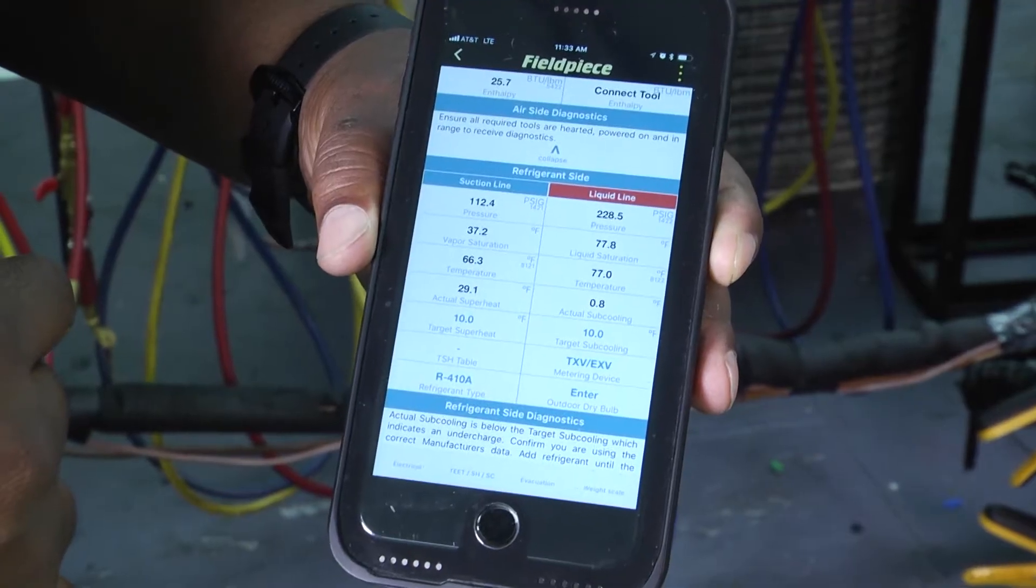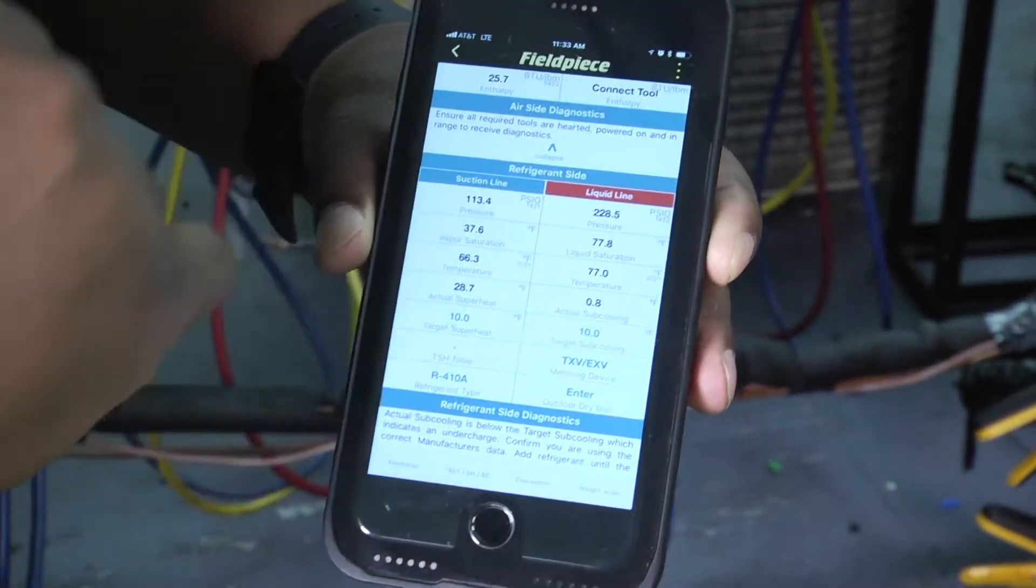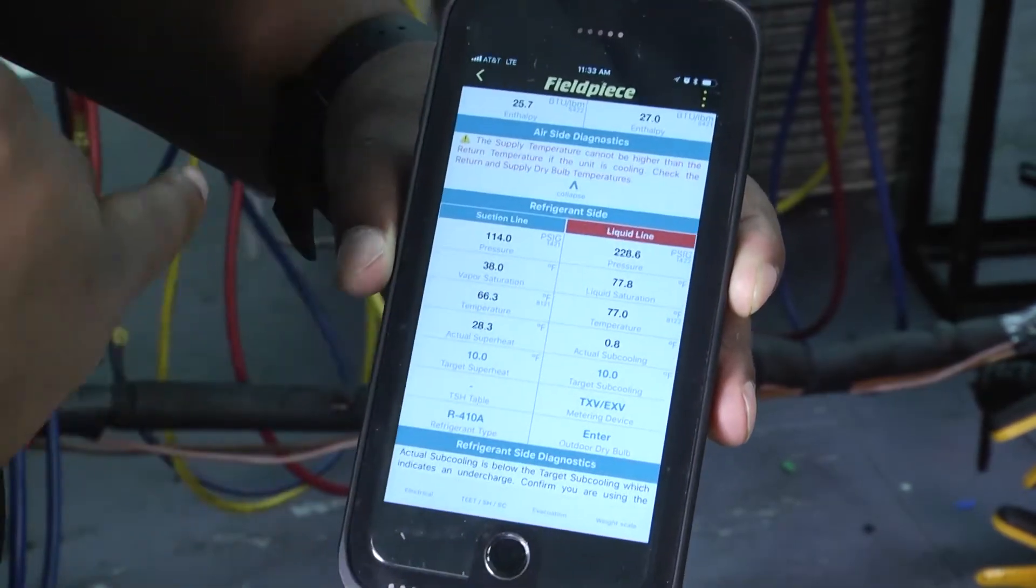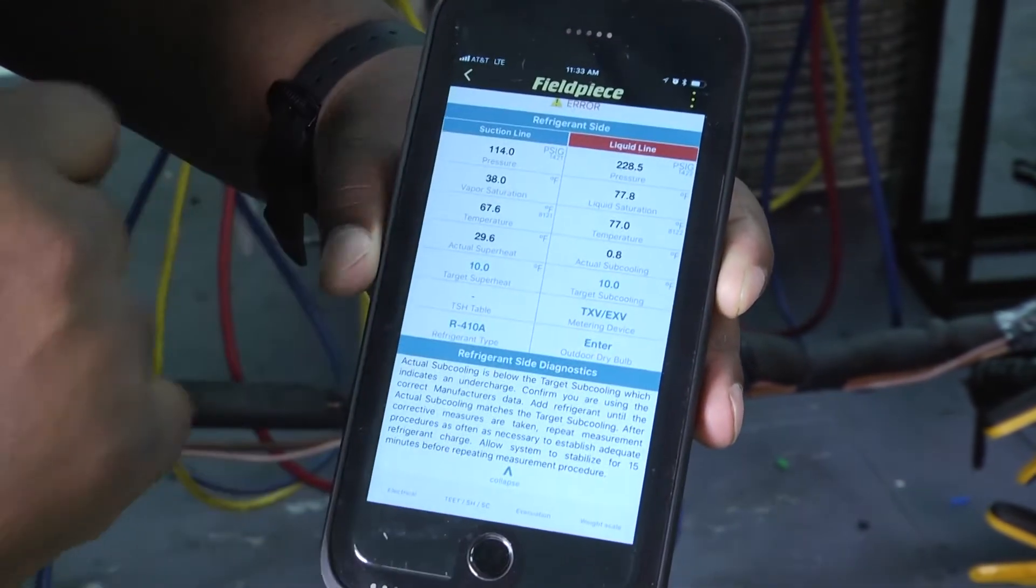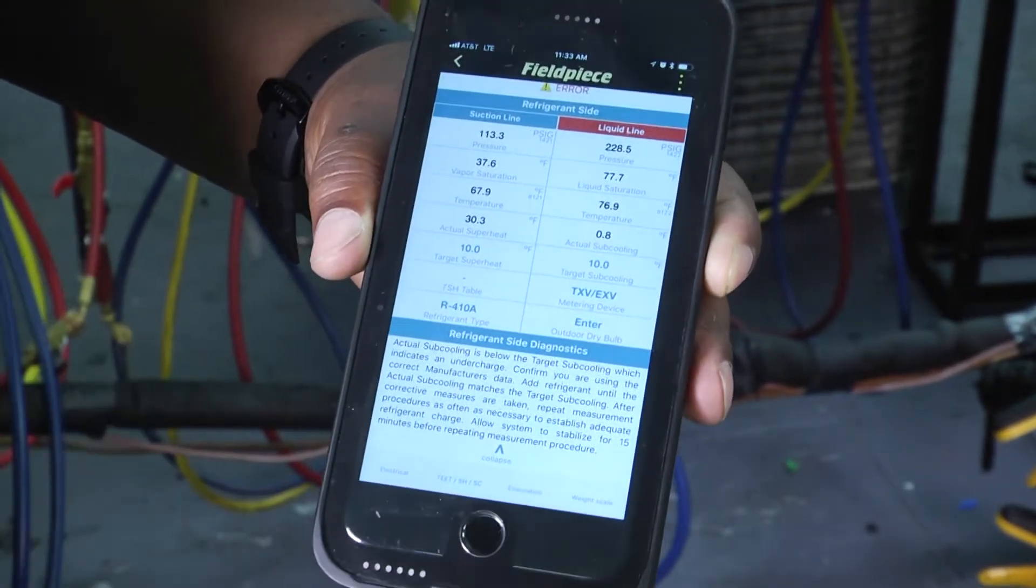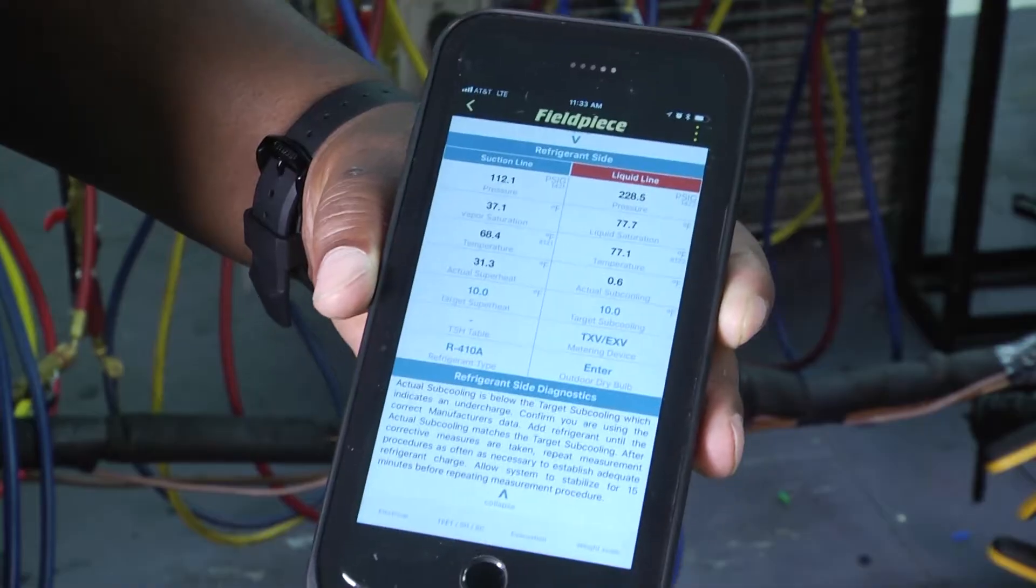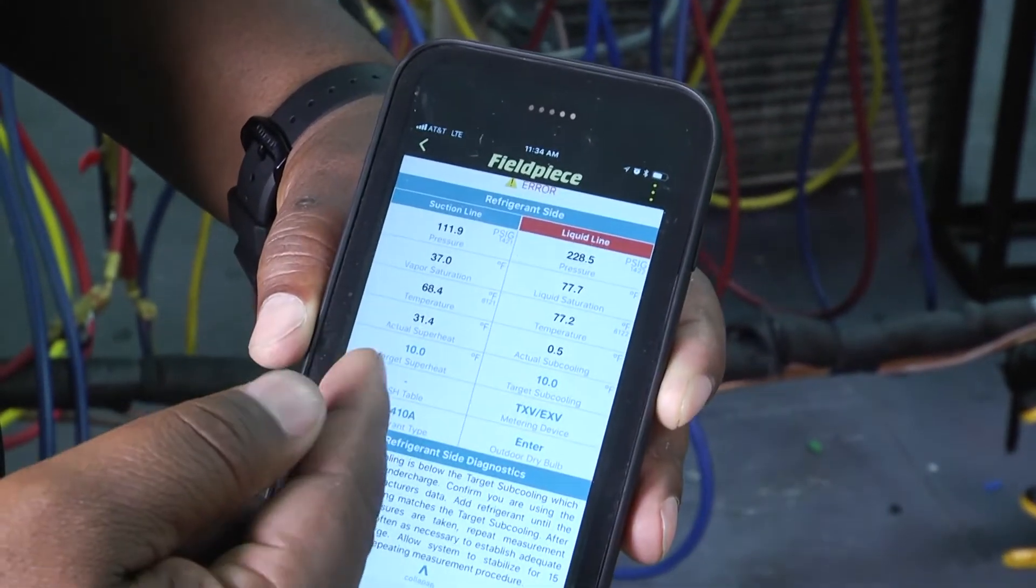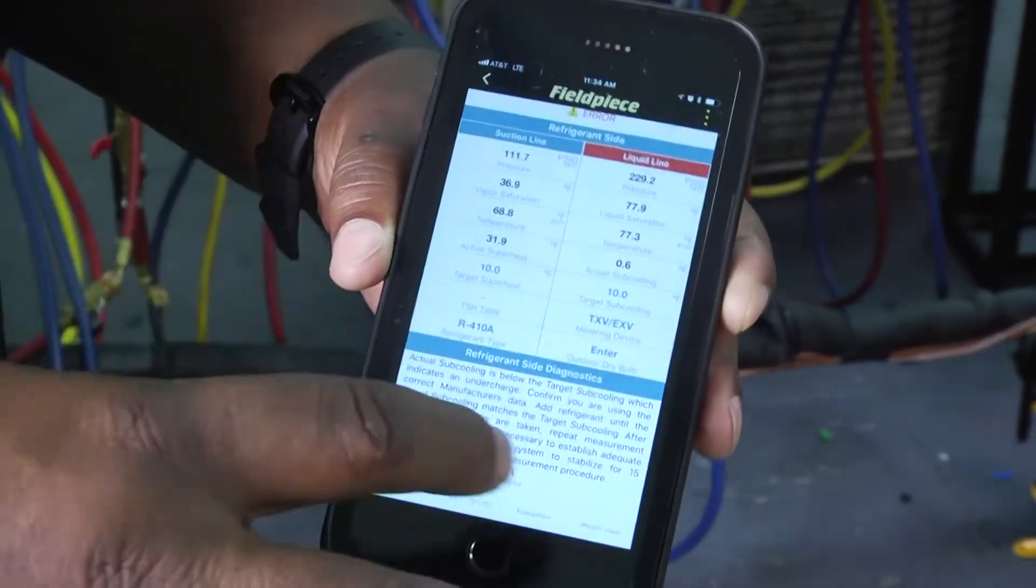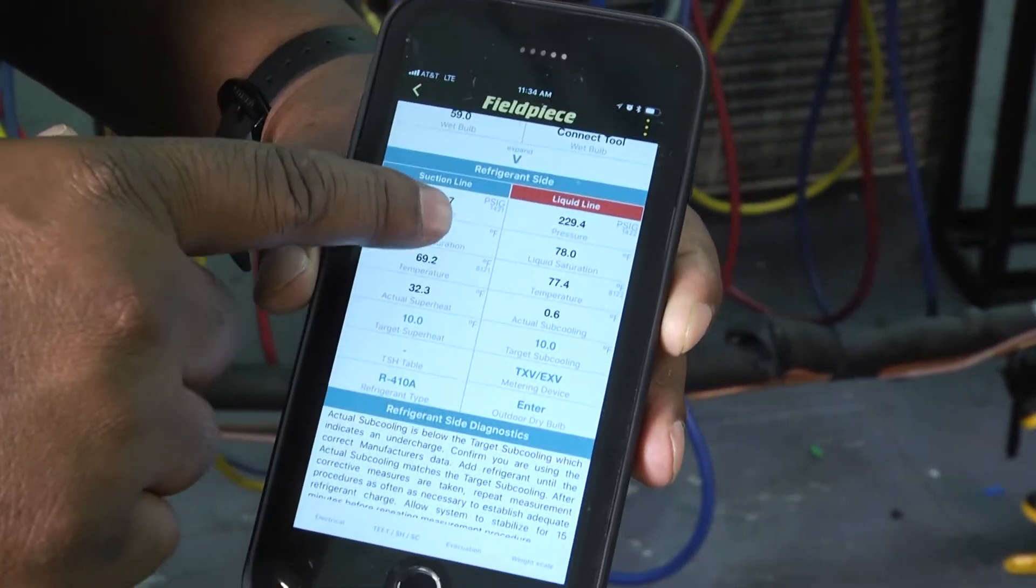Now once our sensors are hooked up, it'll go ahead and give us the pressures there. So here you can see your pressure on your suction side, you can see your liquid side pressure, you can see your vapor saturation, your liquid saturation. And it's already wanting to give us a diagnostic there. So sometimes those target superheats will be based on whatever you left on it the last time. It could have been from a previous job based on the specs of that particular system. I didn't change those. So it's reading both our target superheat at 10 and target subcooling at 10. But once you put in all of the parameters, those target numbers will change. So that's what we have on the refrigerant side.